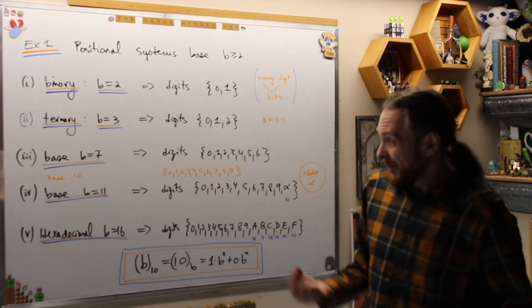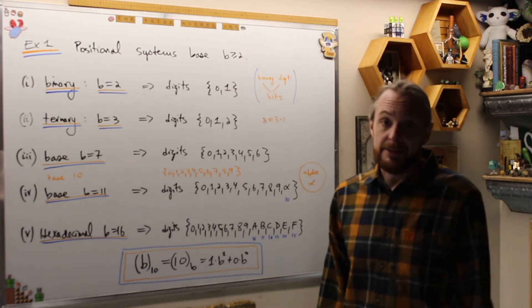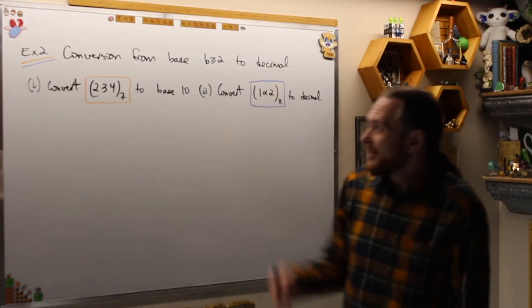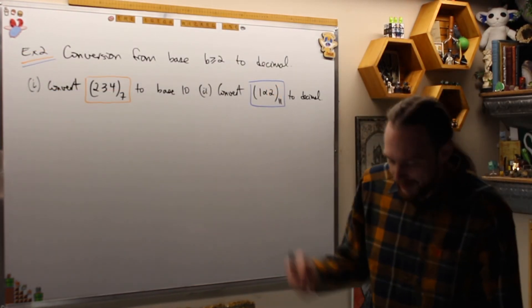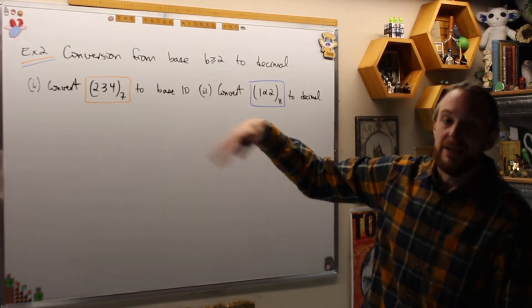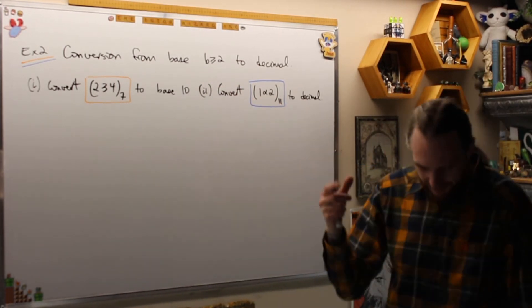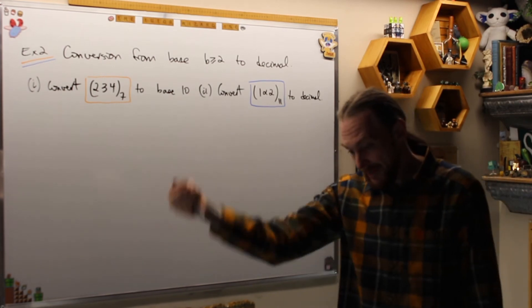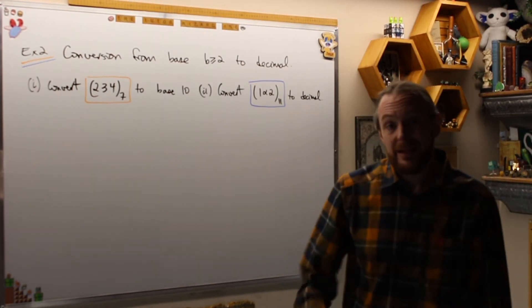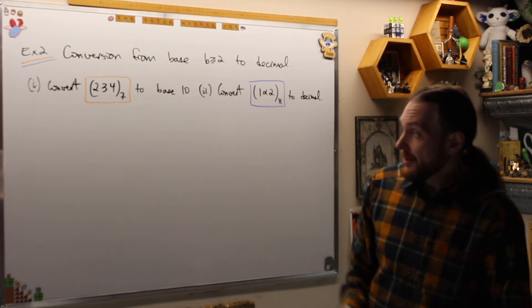Let's get to first of all how do we convert back and forth between the bases. Example 2 is going to be conversion from base B to decimal representation. The only tricky part is when you have this alpha in there or when you have symbols in a larger base. You have to turn them back into their base 10 representation. So how do we do this?